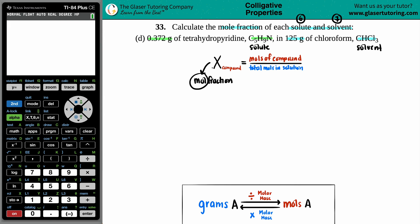But the thing here is that mole, mole, mole, gram, gram. We don't have the right units. So the first thing we have to do is take the 0.372 grams of the tetrahydropyridine C5H9N and go to the moles of C5H9N. And then we're going to do the same thing for the chloroform. 125 grams of CHCl3 go to moles of CHCl3.